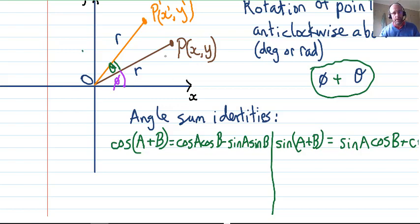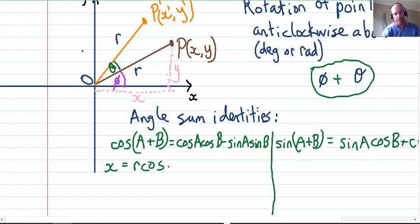In our diagram for point P you can see we have the x ordinate and the y component which form a right angle triangle. We can use some basic trigonometry. We can say that x equals r cosφ, where r is the distance from O to P, the hypotenuse.